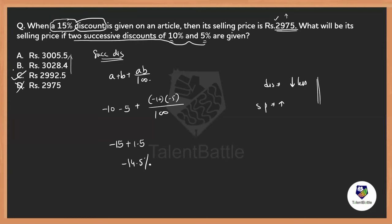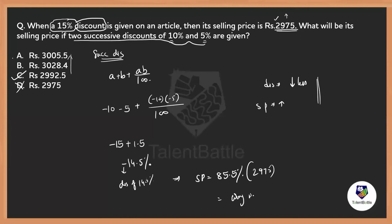You might ask about option A, which is also close. We can verify. The overall discount is 14.5%, meaning the selling price is 85.5% of the mark price. But if you just take 85.5% of 2975, you'll get a wrong answer — because you cannot apply a discount on the selling price. Discount must always be applied on the marked price.